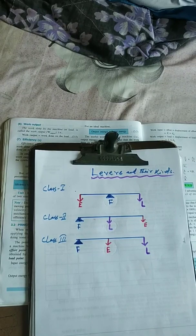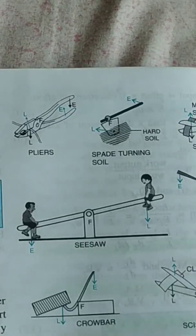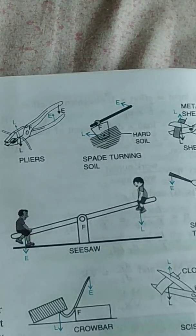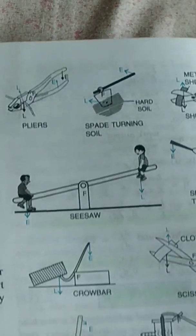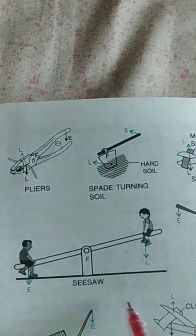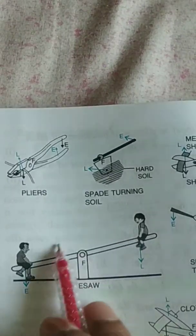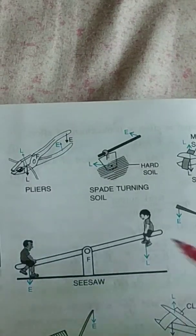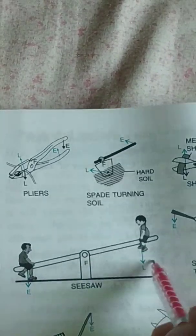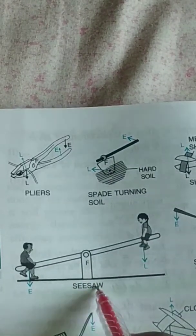Now we have discussed the examples of levers. These are the first class lever examples. Look at number one — the seesaw. Here the fulcrum is in the middle, and load and effort are on either side. If fulcrum is in the middle with load and effort on either side, that will be the first class lever.